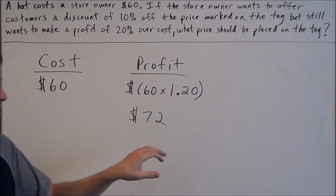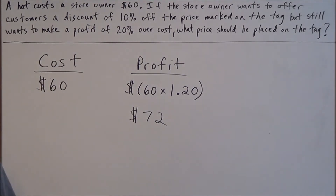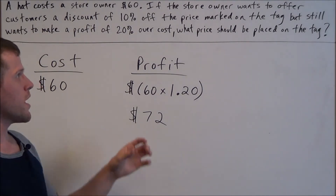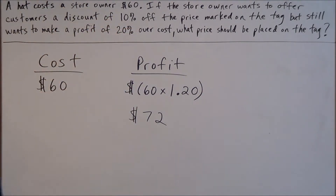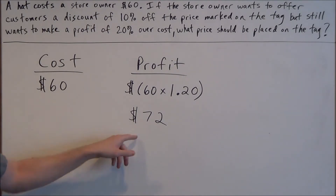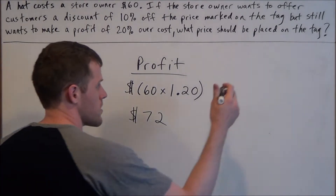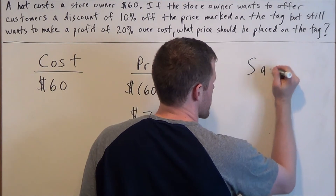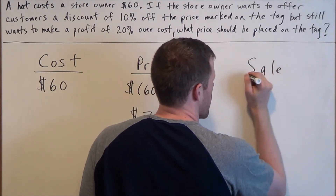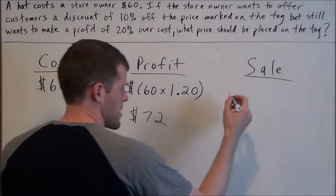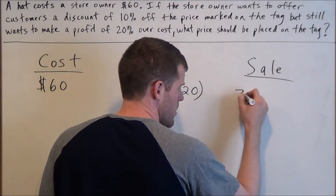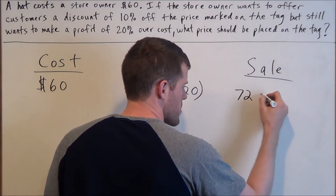So $72 is how much money the store owner wants to receive. To answer this problem fully, he also wants to give customers a 10% discount. Since he needs to make $72, this will help us find the price on the tag. The $72 is the amount of money the owner is going to receive after the discount.